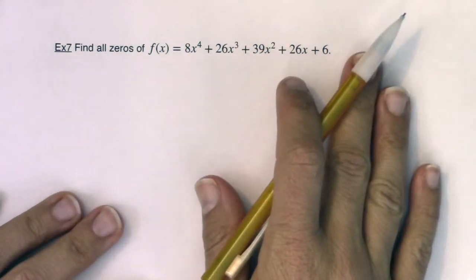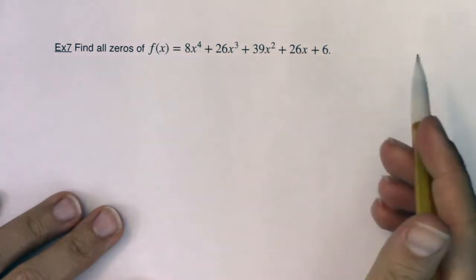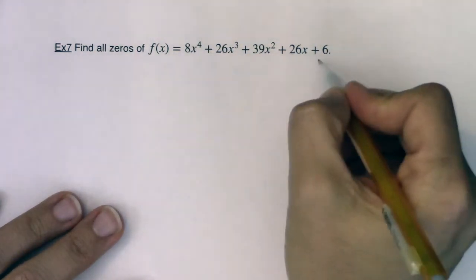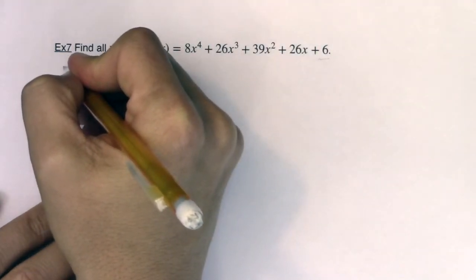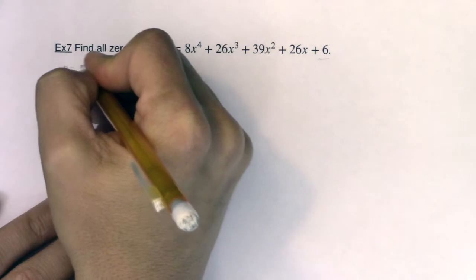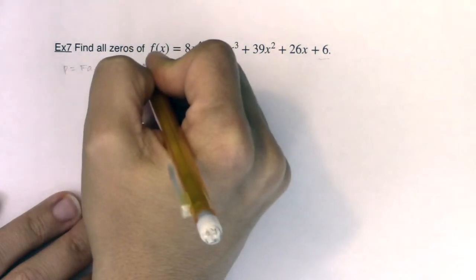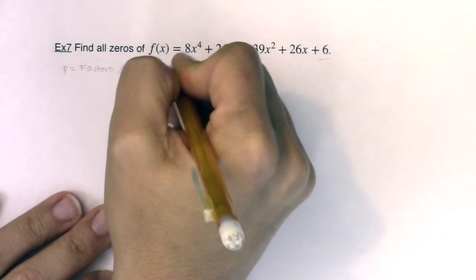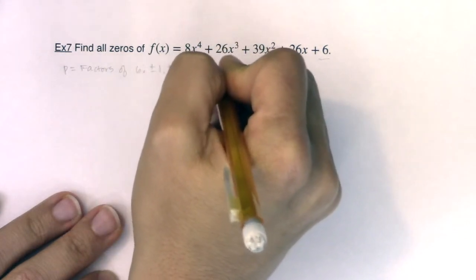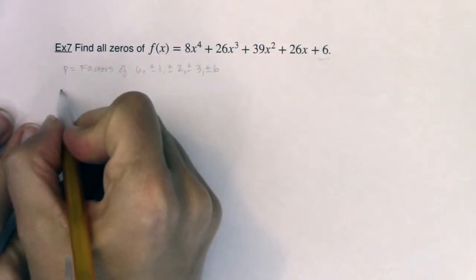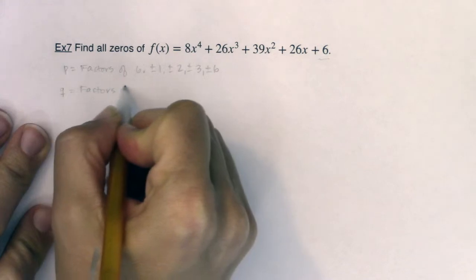Now if I didn't have a calculator, here's where I would start. Back in my day when I was in high school, this is how we would start. We would take all the factors of our constant. So to get P, it would be the factors of six — that's plus or minus one, two, three, and six. And then I would find my Q's, which is going to be the factors of my lead coefficient.